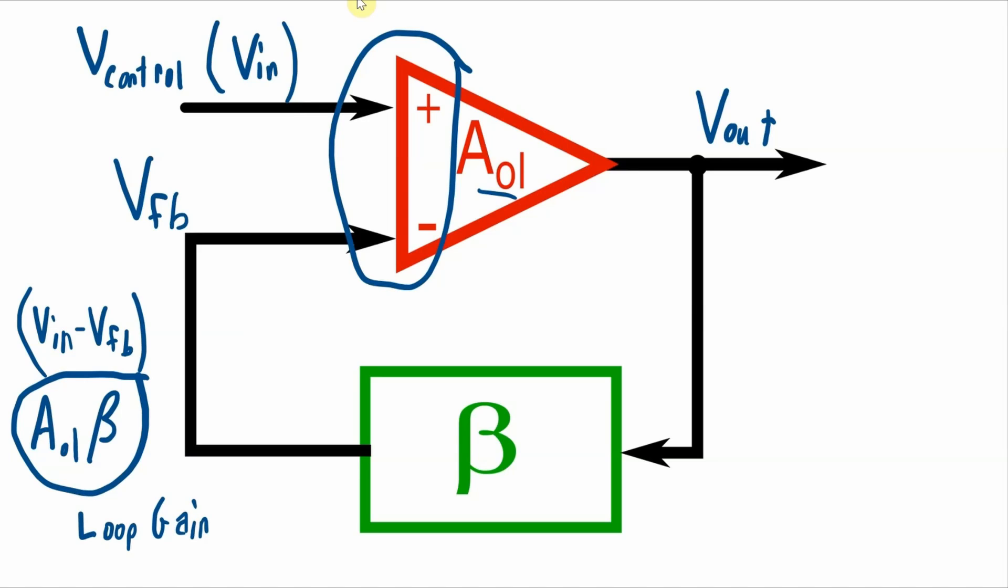And again, from the block, it looks like the feedback will always be negative feedback, because we're subtracting the feedback from the control signal. But remember, this AOL, this AOL block that we see in the loop gain equation is frequency dependent. And sometimes the beta is frequency dependent as well. So both of those, and at the very least, the open loop gain, is going to cause phase shift of the feedback signal as the frequency changes. And when that phase shift gets up to 180 degrees, we have the potential for instability.